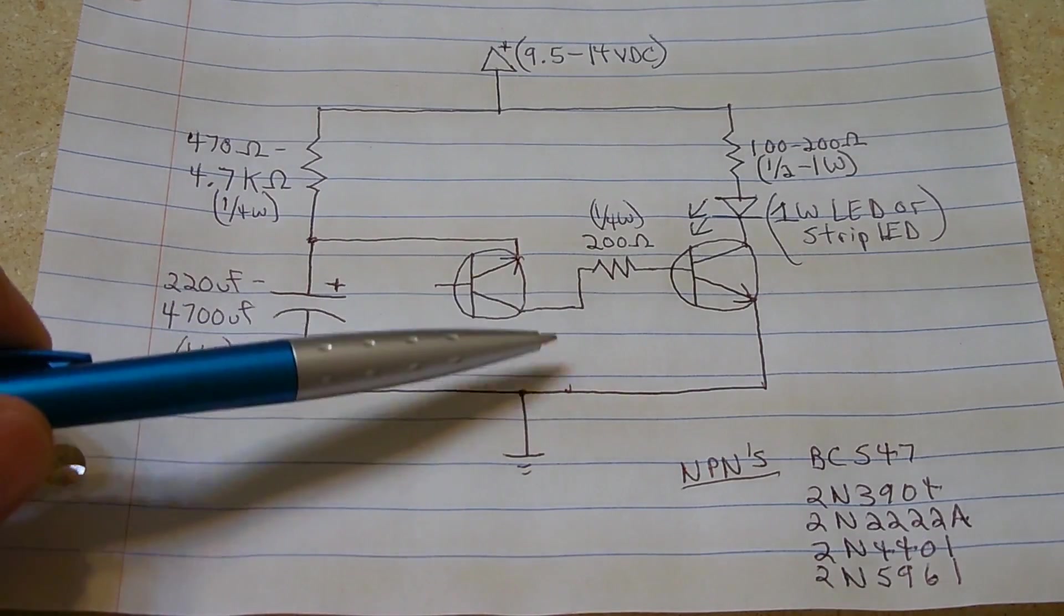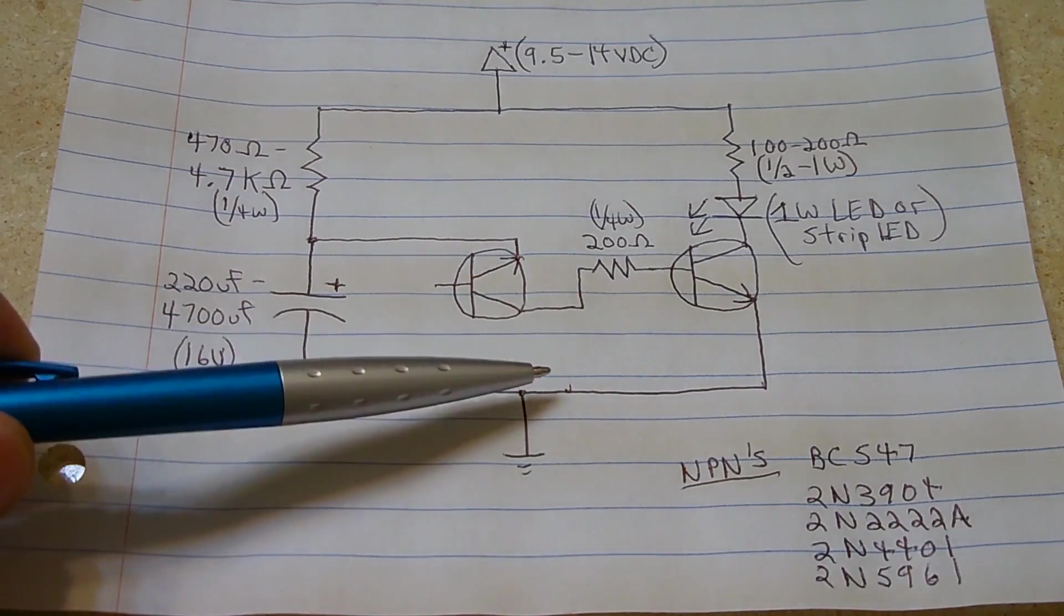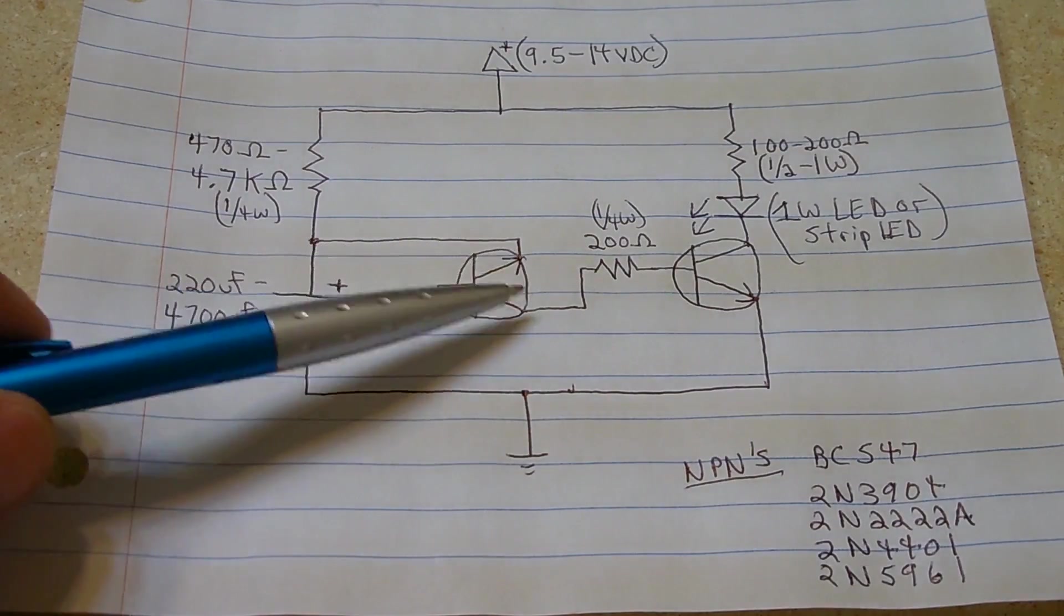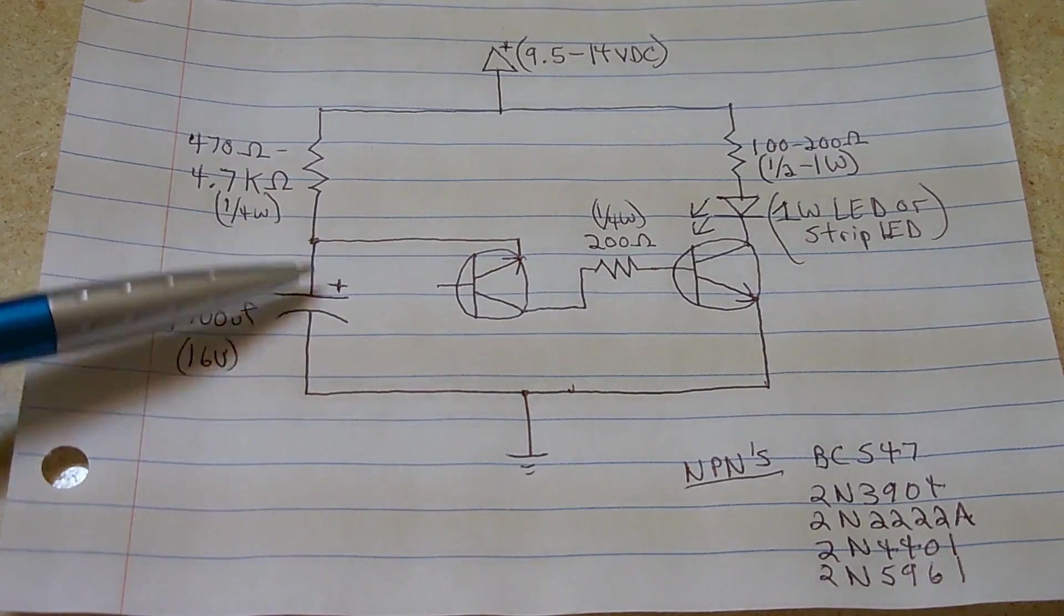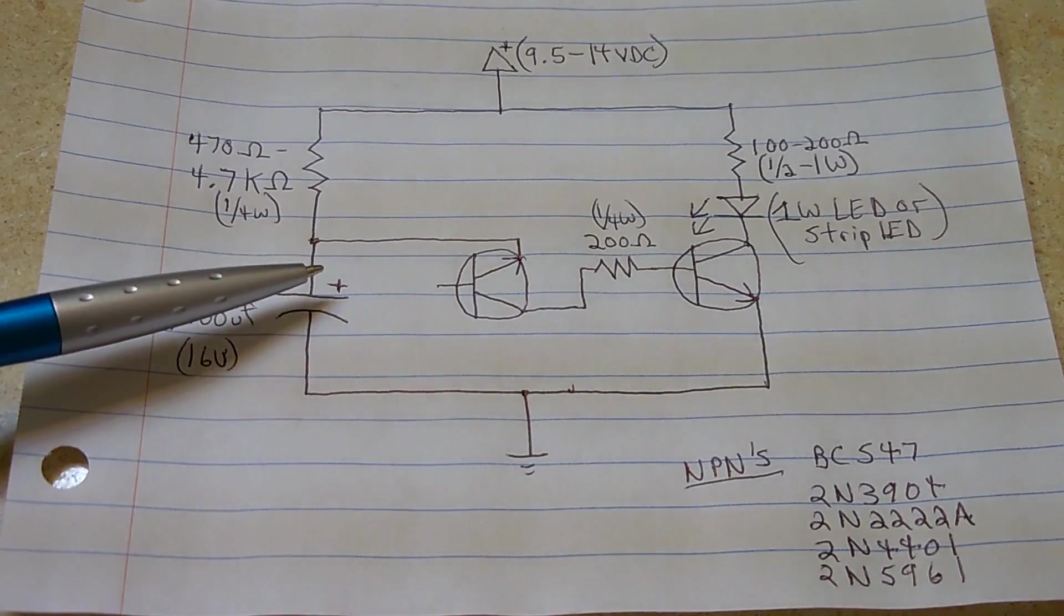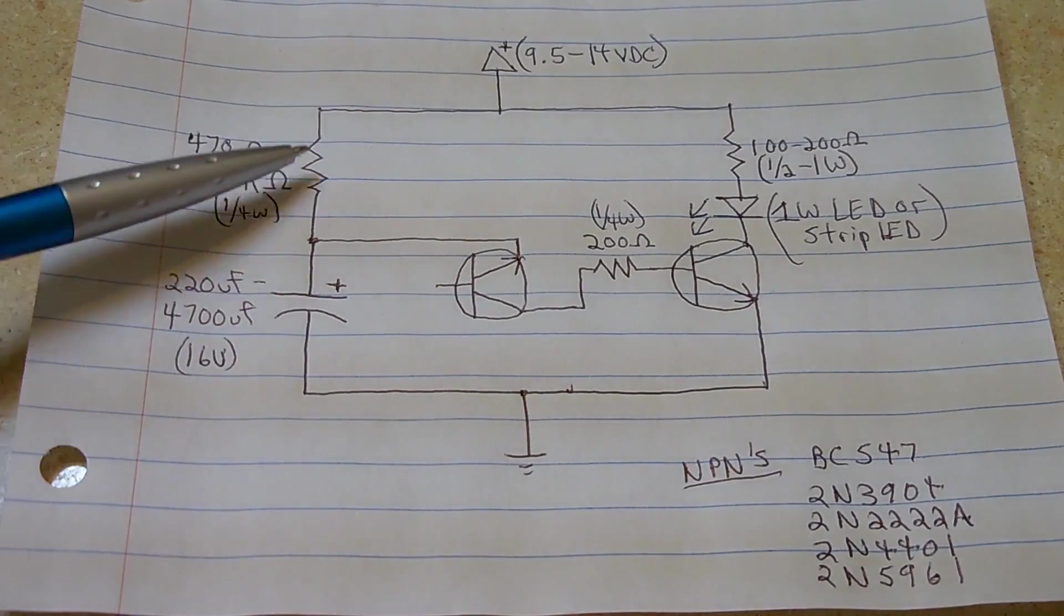And if you had the lower current version, with the LED right here, it would flash. The reason why it flashes is because once this breaks down and the current does flow through, you're going to have a voltage drop over here on this side, and what's going to have to happen, the transistor is going to turn off while the whole thing charges up again.